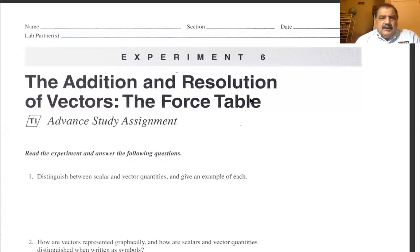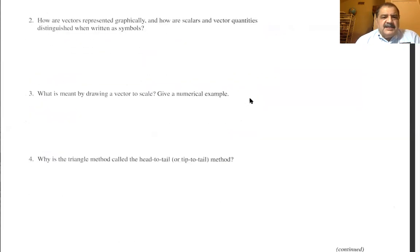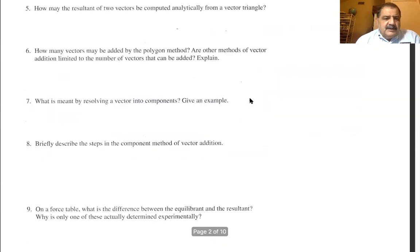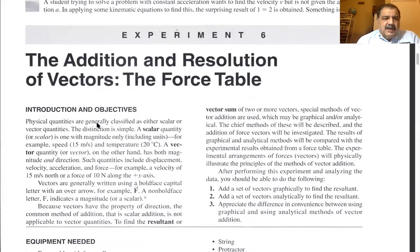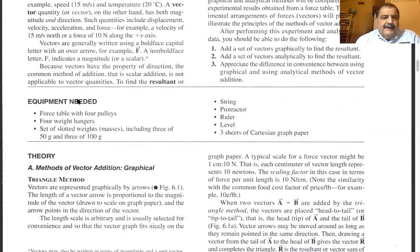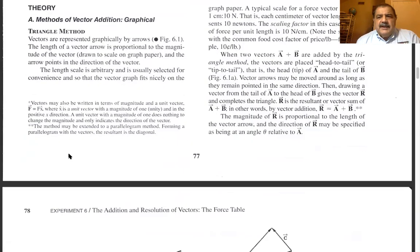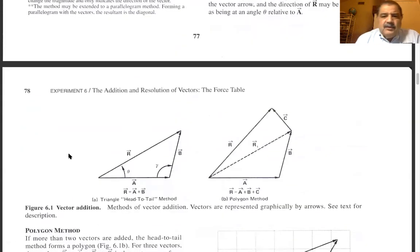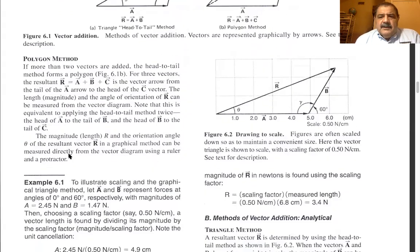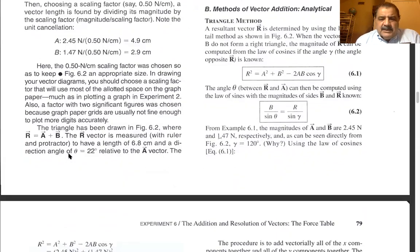So this is the experiment. Of course, you do the advanced study assignment. It's nine questions. Then I want you to read the introduction and the objectives. The equipment needed, the only equipment that you need is a protractor, a ruler, and some sheets of graph paper for drawing. Everything else, I performed the experiment myself and did the experimental portion of it. So I want you to read the theory. It should be review to you, but I want you to read it just the same.